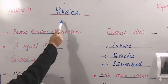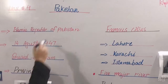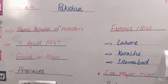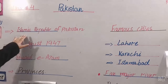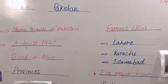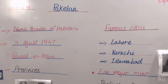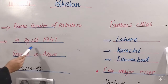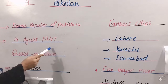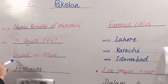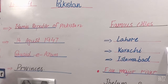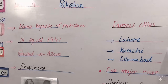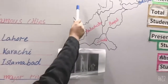आज हमारा टॉपिक है पाकिस्तान। पाकिस्तान का फुल नेम क्या है — Islamic Republic of Pakistan। और ये कब आज़ाद हुआ था, कब बना था — 14 August 1947। और क़ाइद-ए-आज़म ने बनाया था।